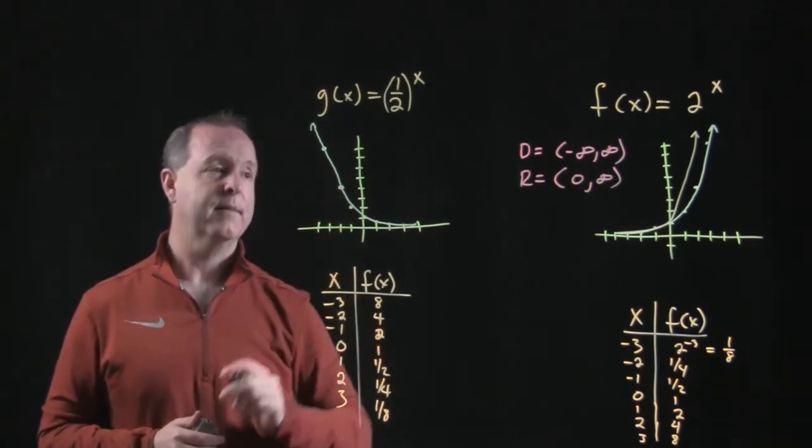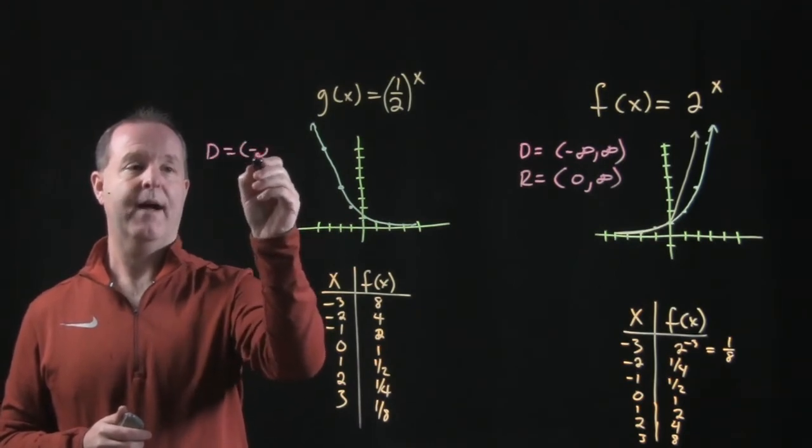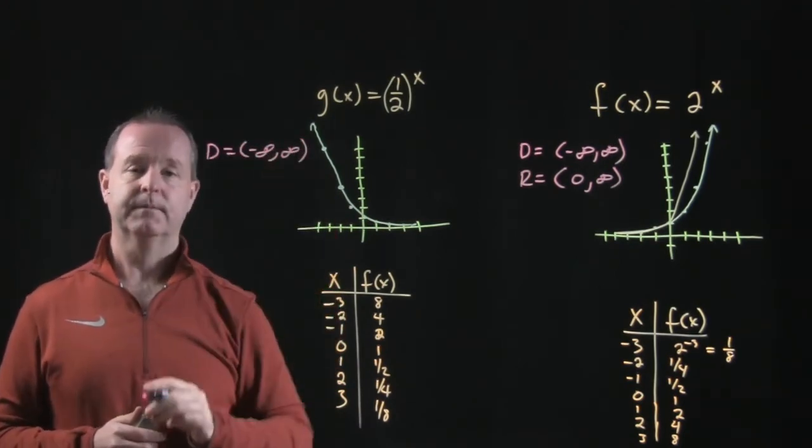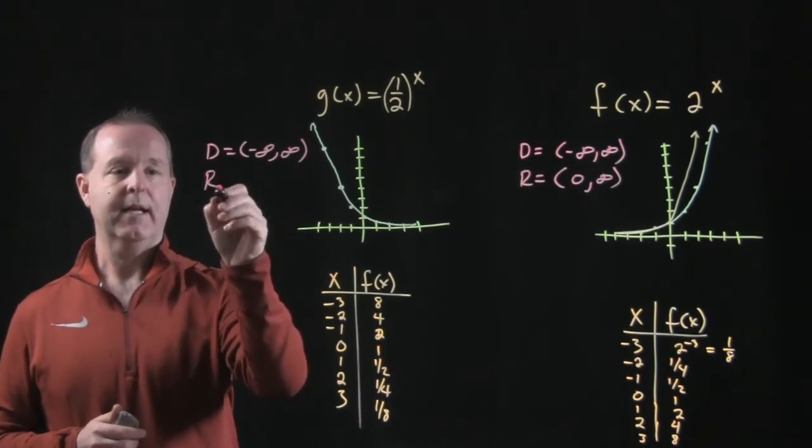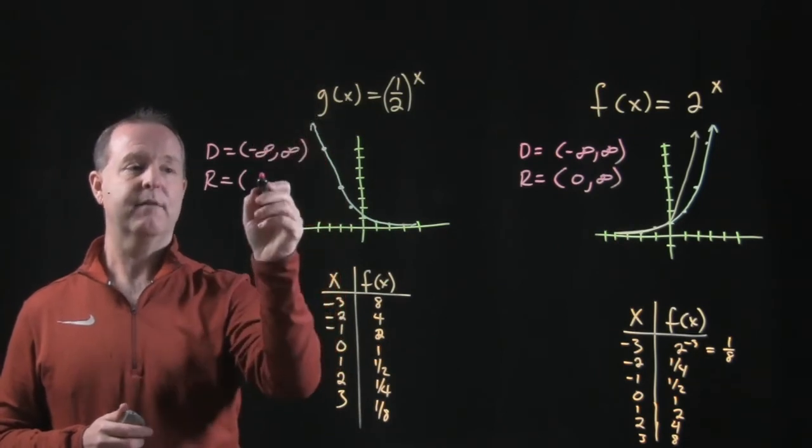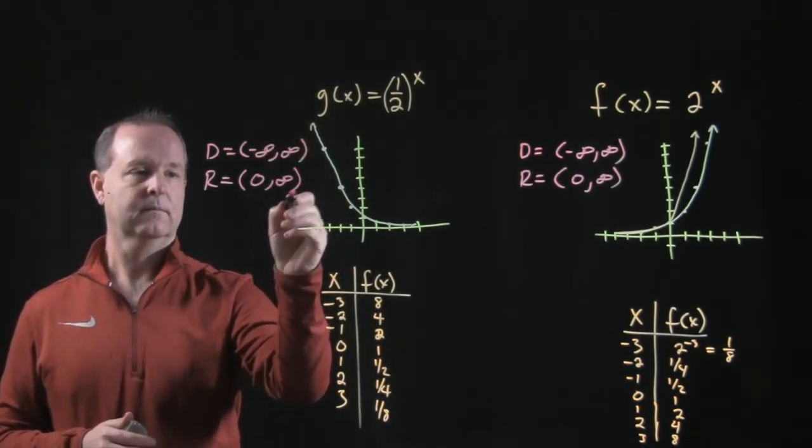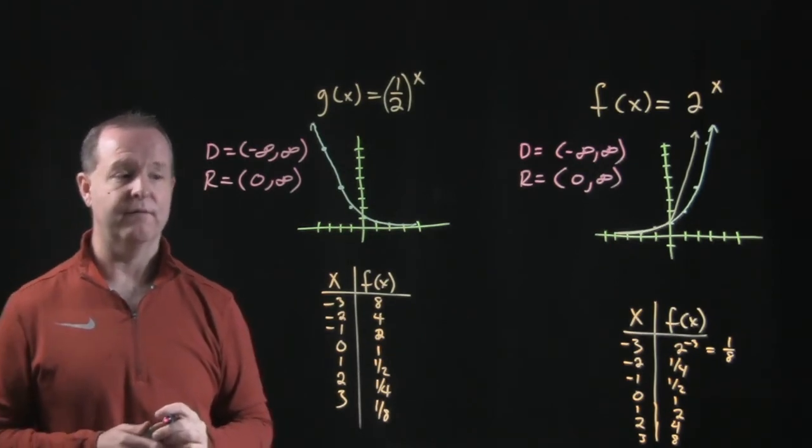Likewise, g of x, its domain again represents all values and its range, even though the airplane is descending and landing, its values are from positive infinity to 0. And so that's where I would expect to find all the values at as well.